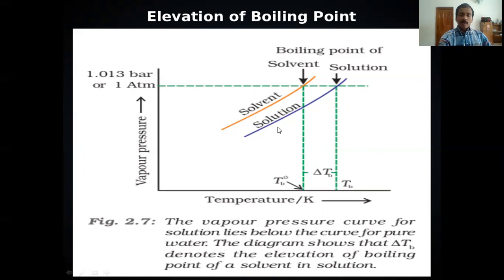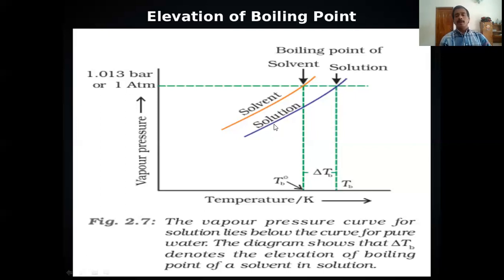When the solvent changes to solution by the addition of a non-volatile solute, some molecules at the surface of the liquid are replaced by non-volatile solute molecules. Therefore, fewer molecules enter the gaseous state, so vapor pressure also decreases. The vapor pressure of a solution is always less than the vapor pressure of the solvent when the solute is non-volatile. At any given temperature, the vapor pressure of the solution is less than that of the solvent.